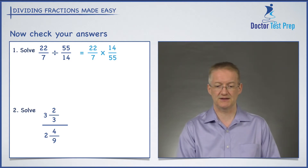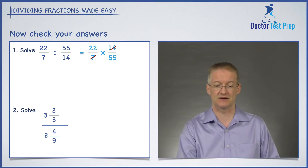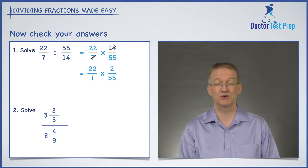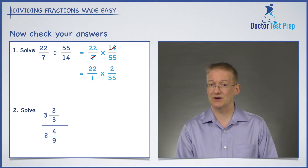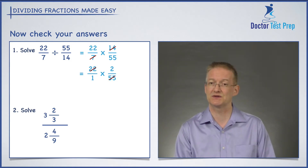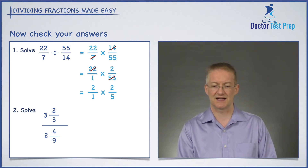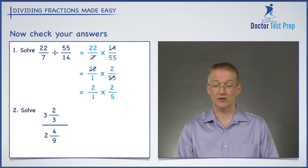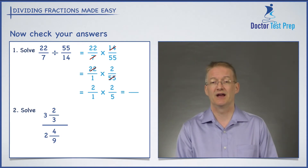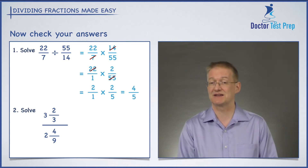Let's see what divides into those. 7 goes into 7 once, 7 goes into 14 twice, so I have 22 over 1 times by 2 over 55. Now 11 goes into 22 and into 55 — 11 goes into 22 twice, 11 goes into 55 five times — so I'm left with 2 over 1 times by 2 over 5. Nothing will reduce here, so I simply multiply the numerators: 2 times 2 is 4, and the denominators: 1 times 5 is 5. My answer is 4 fifths.